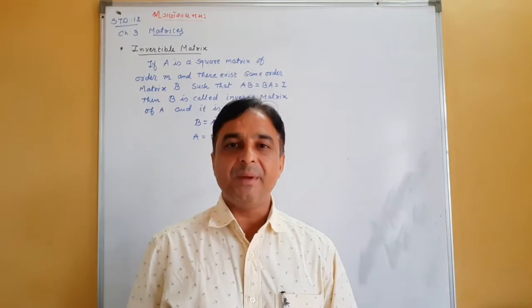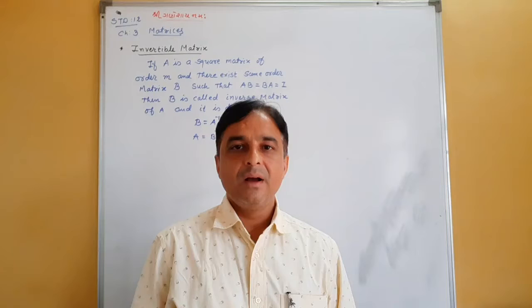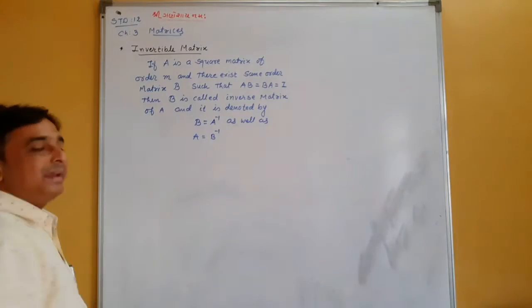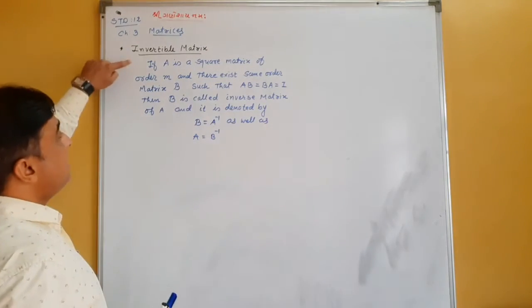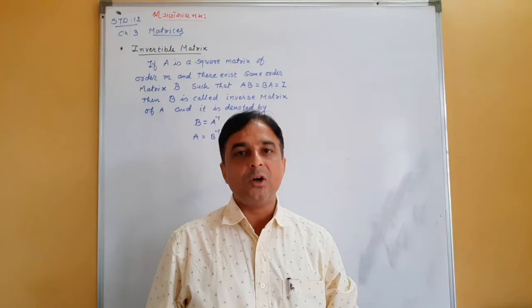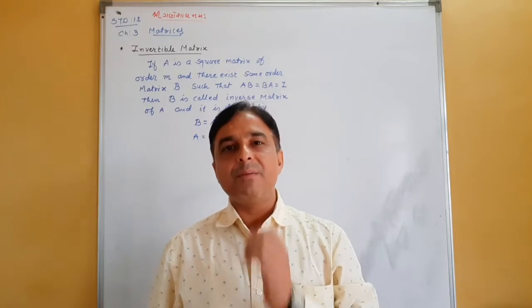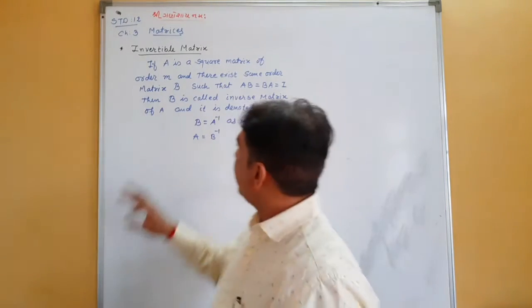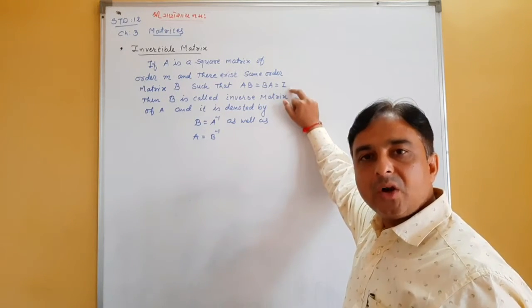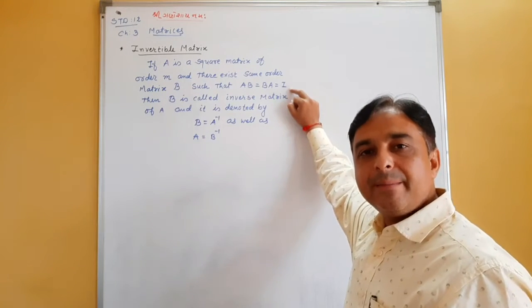Now the most important topic of this chapter, and also the last topic, is the invertible matrix — that means the inverse of a given matrix. So what do you mean by the inverse of a matrix? If A is a square matrix of order m, then there exists a same-order matrix B such that AB equals BA equals I.